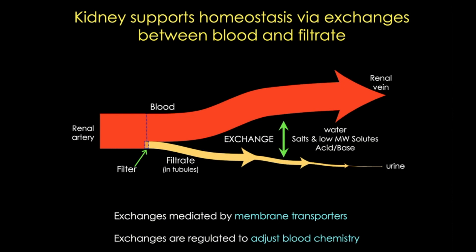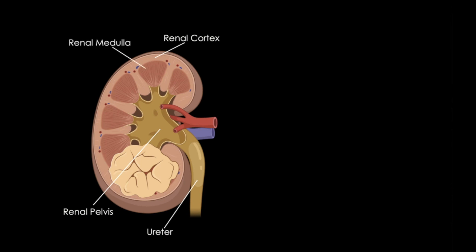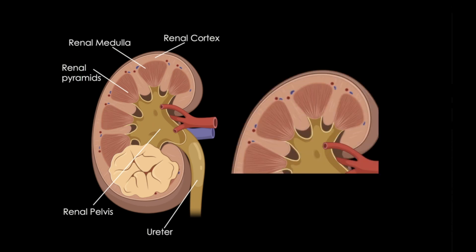Now let's take a quick look at the gross structure of the kidney before we look microscopically. Here's a cartoon cross section of the kidney. Blood vessels and nerves enter the kidney at the hilum, which is also where the ureter exits. The parenchyma consists of the outer renal cortex, which contains corpuscles and tubules, and an inner renal medulla, which mostly consists of tubules and ducts. In humans the medulla is organized into structures called pyramids, and each pyramid with the cortex around it is called a renal lobe.